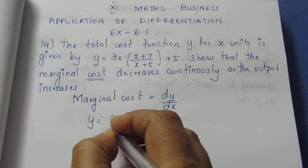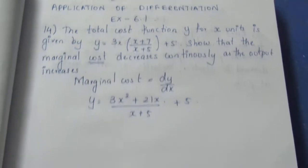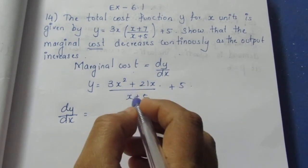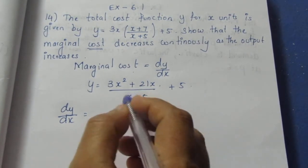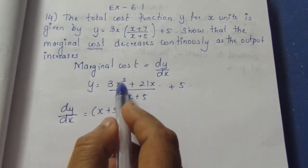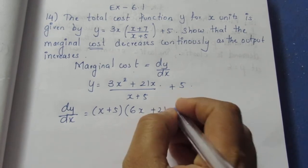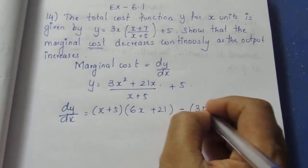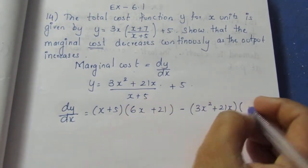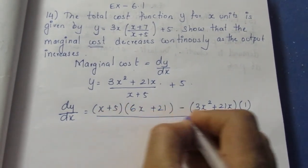We find the marginal cost. The function gives us 3x squared plus 21x in the bracket when multiplied out. Now we find dy by dx. dy/dx follows the quotient rule of differentiation — denominator into numerator differentiation minus numerator into denominator differentiation. Numerator differentiation gives 6x plus 21. Denominator differentiation of (x plus 5) gives 1, and constant term gives 0. All divided by denominator squared.